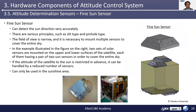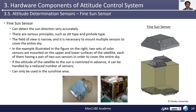The next one is the fine sun sensor. Fine sun sensors can detect the sun's direction very accurately. There are various principles such as slit type and pinhole type. The field of view is narrow, and it is necessary to mount multiple sensors to cover the entire sky. In the example illustrated in the figure on the right, two sets of solar sensors are mounted on the upper and lower surfaces of the satellite, each having a pair of two sun sensors in order to cover the entire sky. If the altitude of the sun is known in advance, it can be handled by a reduced number of sun sensors. Sun sensors can only be used in the sunshine area.